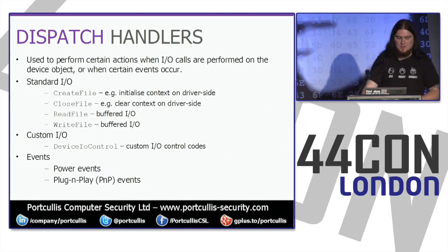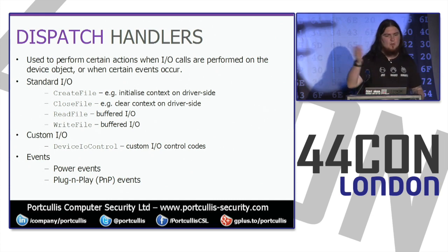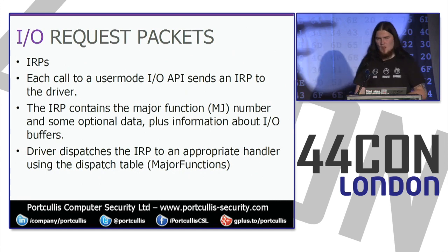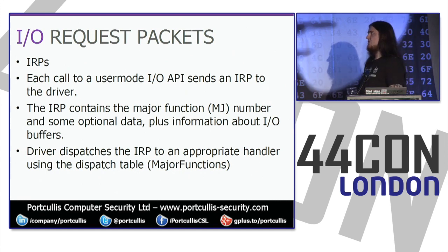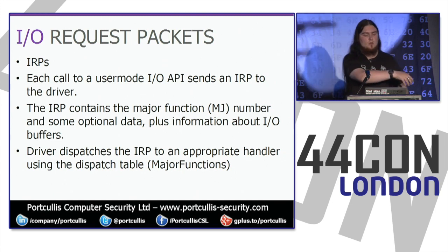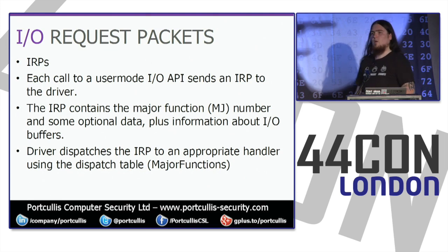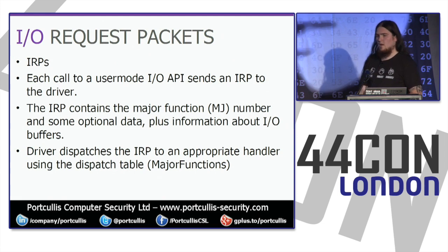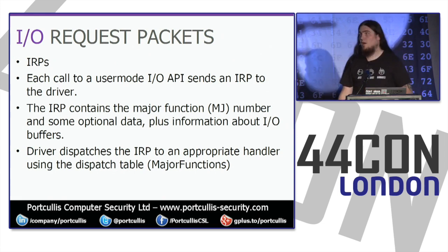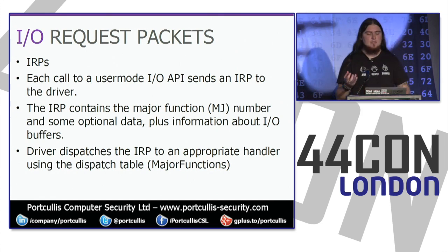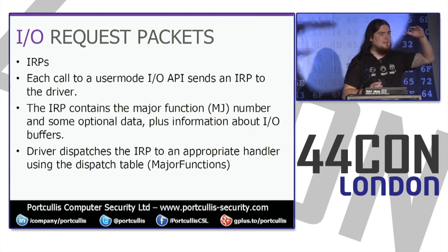Power events are things like the system is about to shut off, go to sleep, or just woke up. When any of these dispatch functions are called — when the device is told a user mode function has been called against it — it gets issued what's called an I/O request packet, or an IRP. An IRP is essentially just a structure in memory, and it contains the major function number — the index in the table it wants to call.